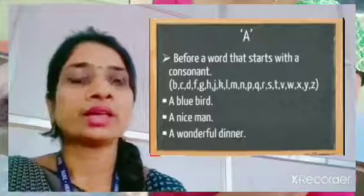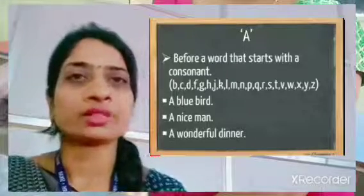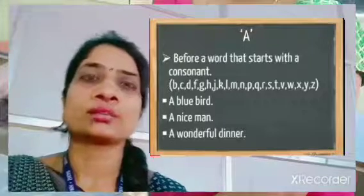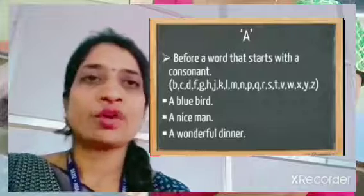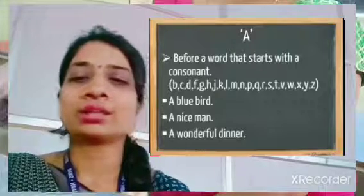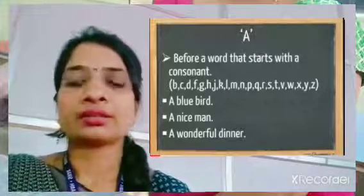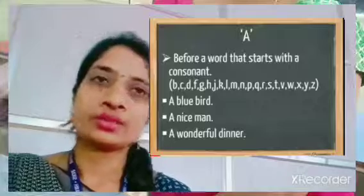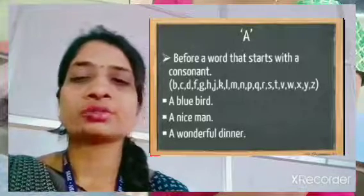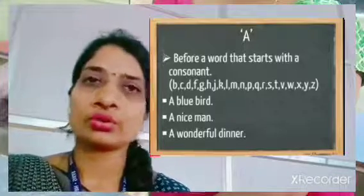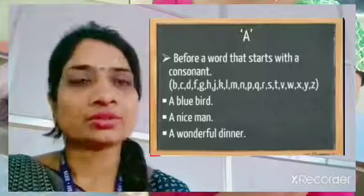'A' is used with consonant sounds. The vowels are a, e, i, o, u. With all the alphabets that are not vowels — that is, consonants — we use 'a'. For example: a blue bird, a nice man, a wonderful dinner. In all of these we use 'a'.